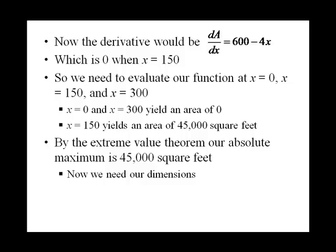So now, let's just go back and find our dimensions. Since x was 150 feet and y is equal to 600 minus 2 times x, we find that y is equal to 300 feet. So our maximum possible area is 45,000 square feet. And the dimensions are that the walls that come out from the mountain are 150 feet, and the wall that's parallel to the mountain is 300 feet.